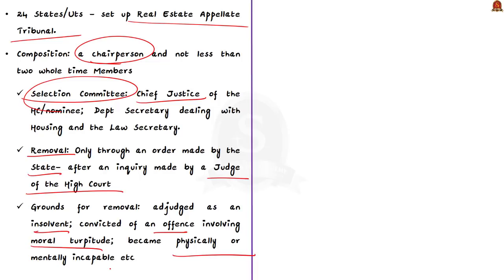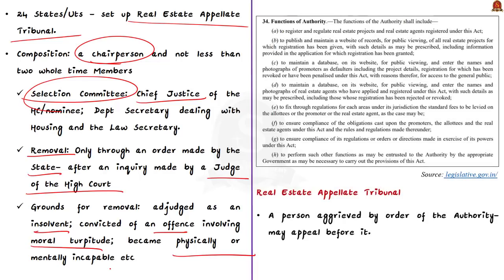The important functions of the Real Estate Regulatory Authority include: registering and regulating real estate projects and agents, and publishing and maintaining a website that acts as a record of all real estate projects for which registration has been given. This website can be viewed by the public, which increases accountability and transparency.